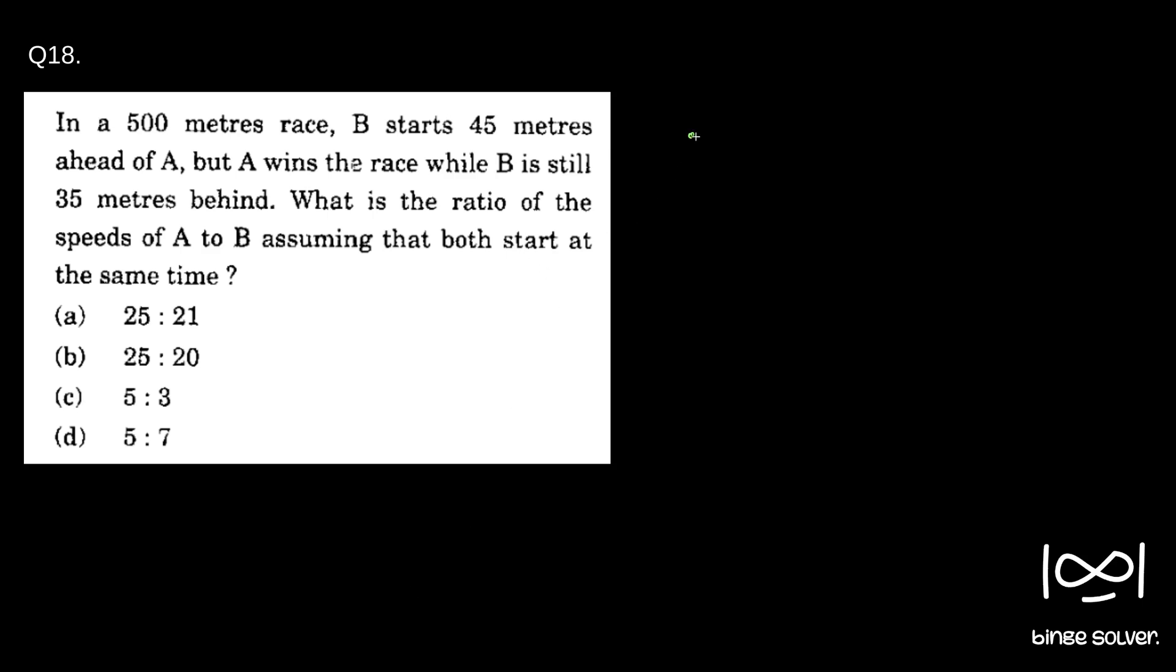So just a representation. Let this be 500 meters and this is from where B starts, which is 45 meters ahead of A. And at the end point, say this is A's final position and B is here, which is 35 meters behind.